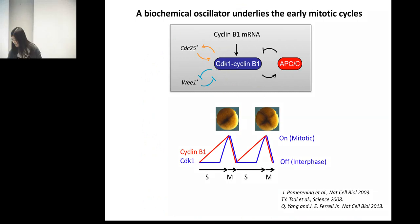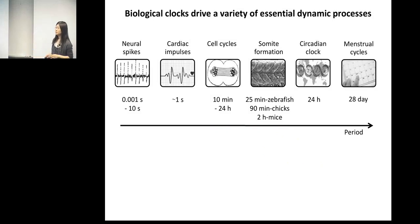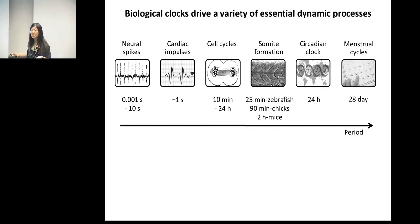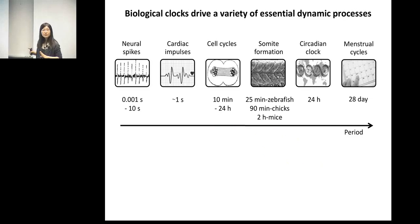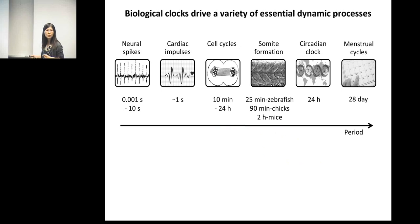There are many oscillators that play important roles in cellular and developmental processes, including neural spikes, heartbeat, and in vertebrates a segmentation clock that drives the periodic formation of somites. There is also the circadian clock, which almost all organisms on Earth have, because it drives our internal clock to match the day-night cycles. These oscillators are very different — some are formed by protein networks, some by genetic regulation — and their periods span orders of magnitude.